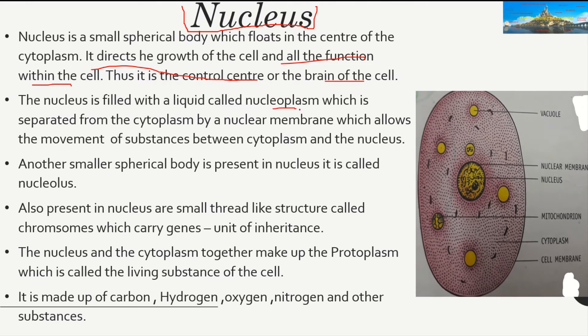The nucleus is filled with a jelly-like substance called nucleoplasm, which is separated from the cytoplasm by the nuclear membrane. The nuclear membrane is also porous, allowing the exchange of things between the cytoplasm and the nucleoplasm. A ball-like structure in the center of the nucleus is known as the nucleolus.